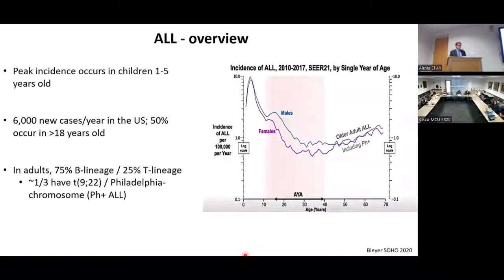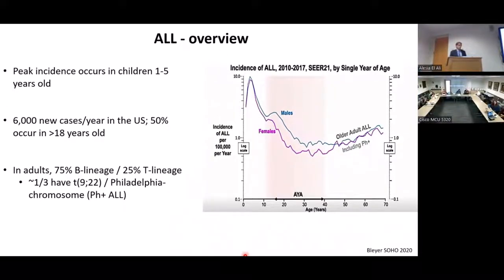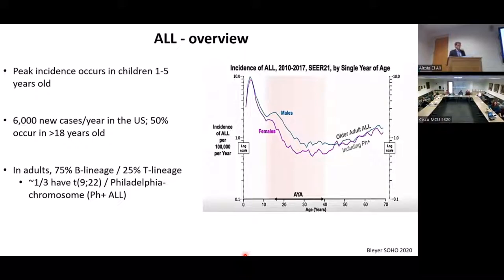Just by way of background, ALL is thought of as a younger person's disease. The peak incidence occurs in young children between the ages of one and five. It's a rare disease with only 6,000 new cases per year in the U.S., and about 50% of those cases occurring in patients 18 years of age and older. In the adult population, roughly 75% of ALL cases are B-lineage ALL and roughly 25% are T-lineage ALL.